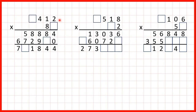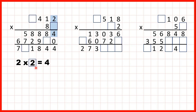Here we have some missing digit long multiplication problems, and the way to solve these is to work through the problems in the same steps that we use for long multiplication. So we start by multiplying our ones digits, but we have 2 times something equals 4. Now you might think 2 times 2 is 4, so this answer box has to be a 2.